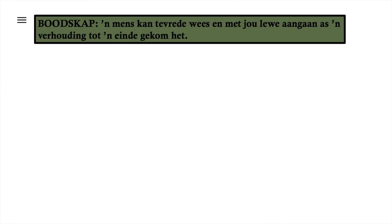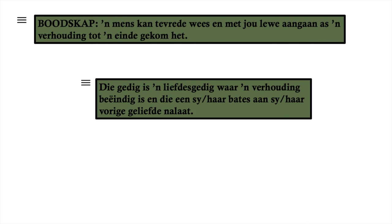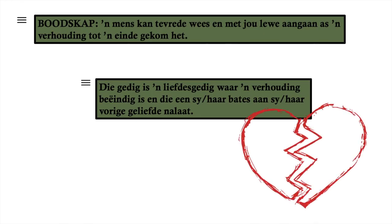The boodskap (message) of the poem is: a person can be satisfied and move on with their life when a relationship has ended. The poem is a liefdegedig (love poem) where a relationship has ended and one person leaves their deprived assets to the other. It's not a bitter ending — it's a healthy, peaceful parting.